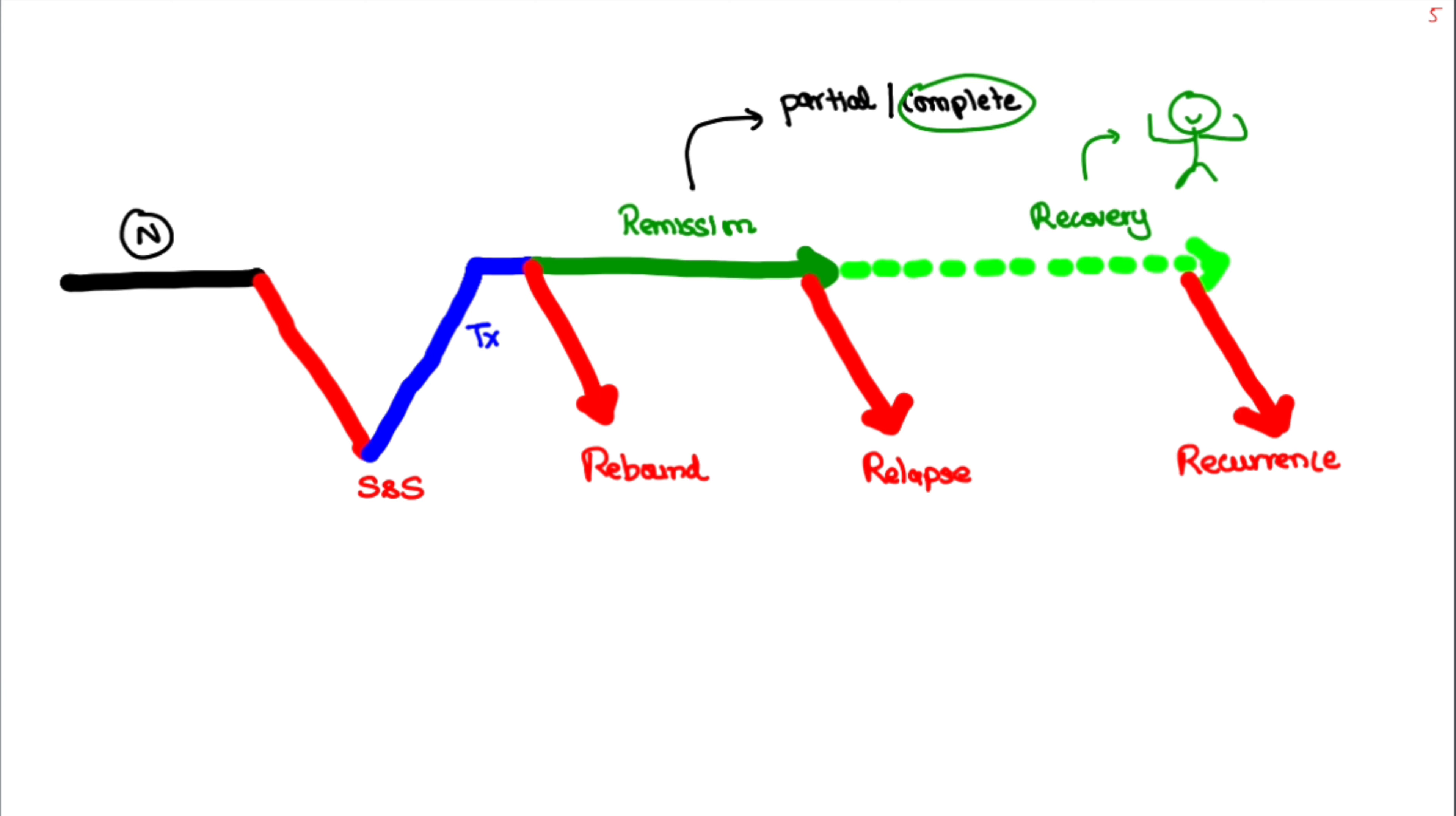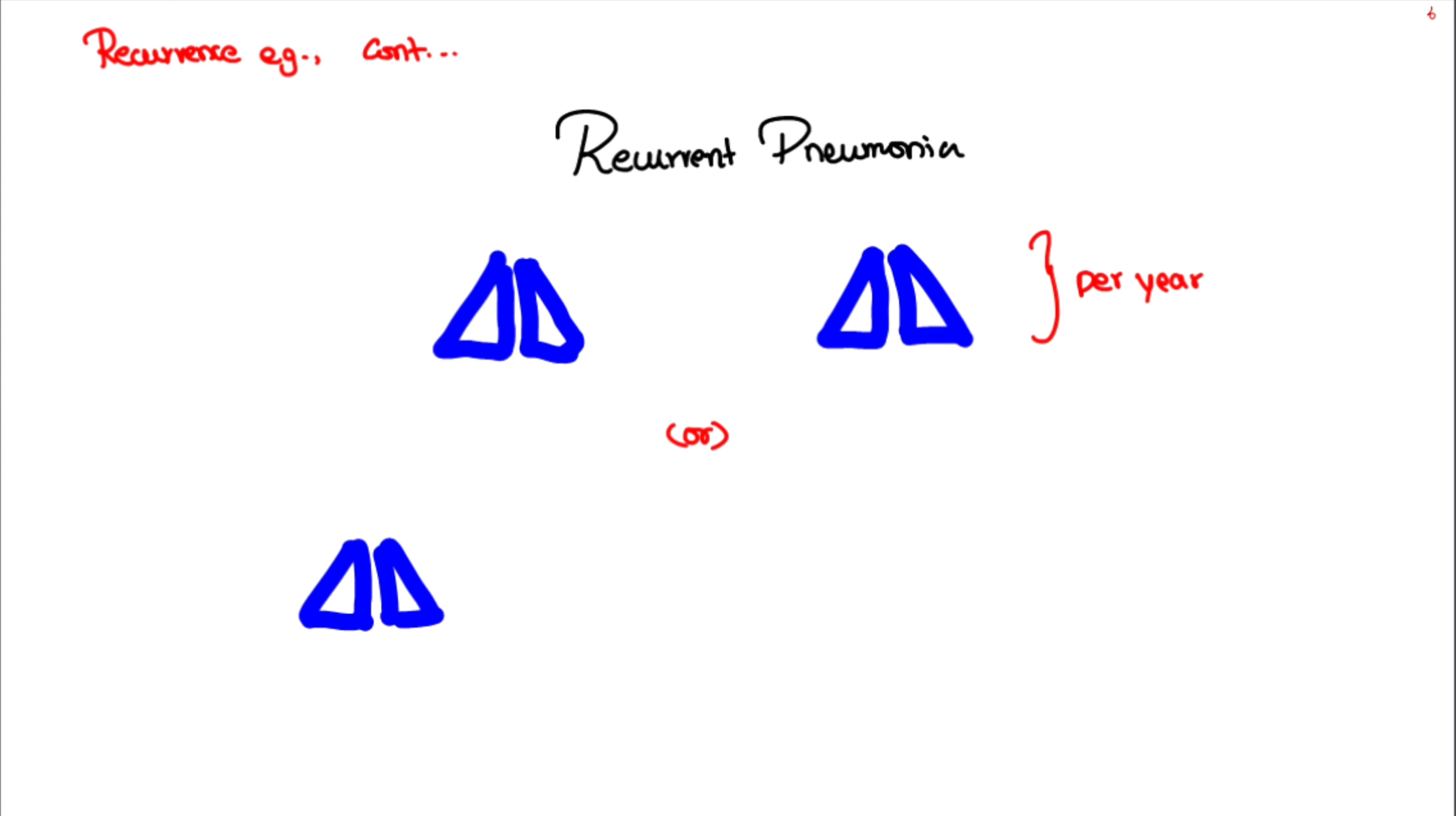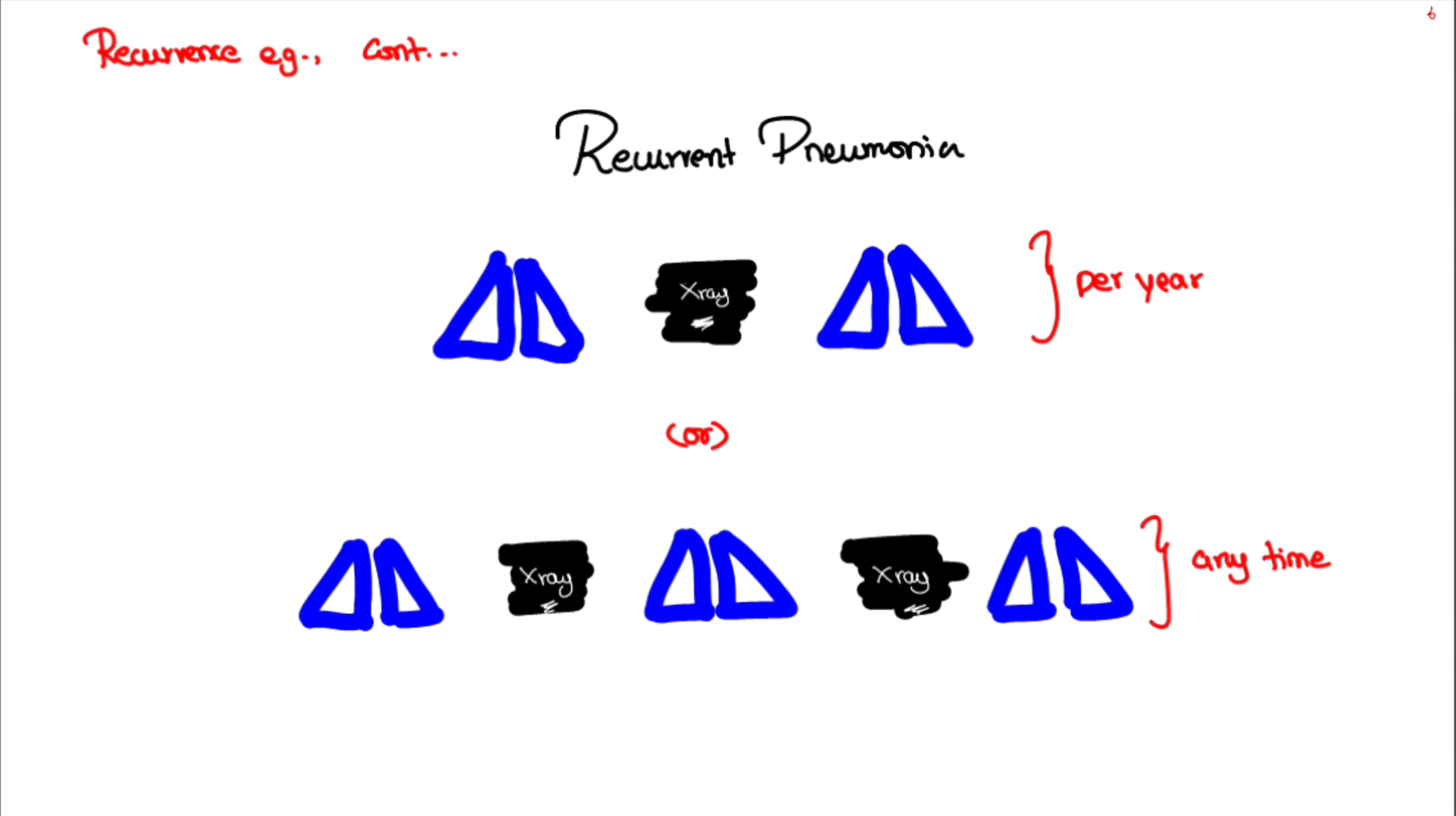Let's see an example for recurrence. In case of recurrent pneumonia, the definition goes like this: at least two episodes per year or three episodes ever with radiological clearance in between. Here the radiological clearance implies recovery or cure. The next episodes here are of new onset, so this is recurrence.